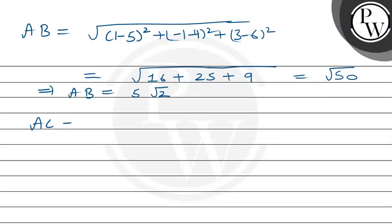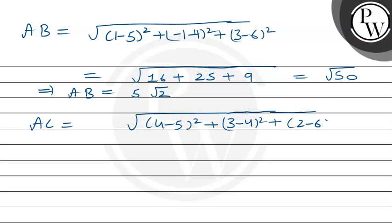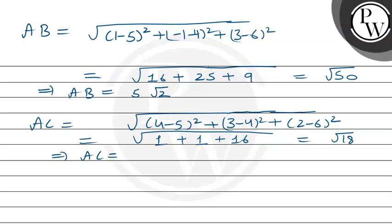Now we find AC: AC = √[(4-5)² + (3-4)² + (2-6)²] = √[(-1)² + (-1)² + (-4)²] = √[1 + 1 + 16] = √18 = 3√2.